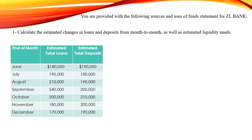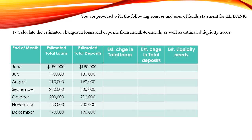To answer this question, we need to add three more columns to this table: the estimated change in total loans, the estimated change in total deposits, and finally the estimated liquidity needs. To determine the estimated change in total loans for the month of June, we need the values for May. Since the estimated total loans and deposits for May are unknown, we cannot calculate the change or the liquidity needs for June.